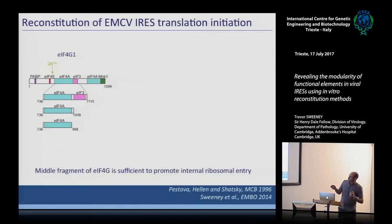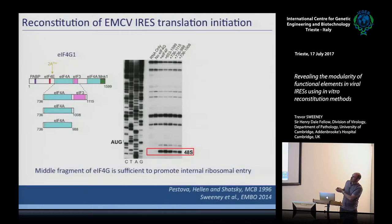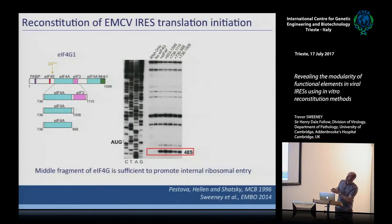We found that we could truncate EIF4G — cloning out just the middle fragment able to bind EIF4A and EIF3. Without EIF4G, we don't see complex formation. Adding the full-length protein restores nice complex formation. Remarkably, even truncations — just this middle fragment, or even removing the EIF3 binding site — still show 48S complex formation. What became clear is that just this middle fragment of EIF4G was required for IRES activity.